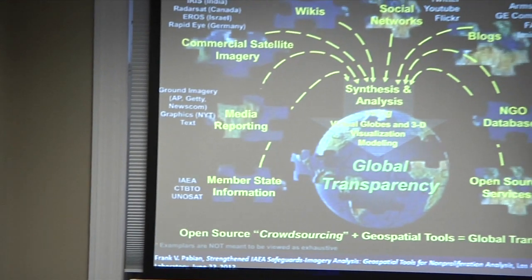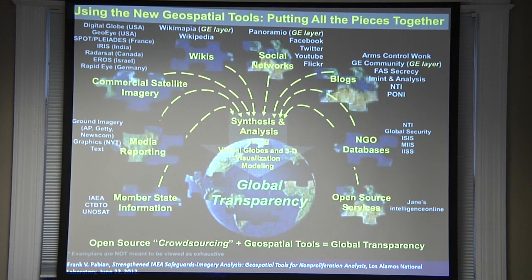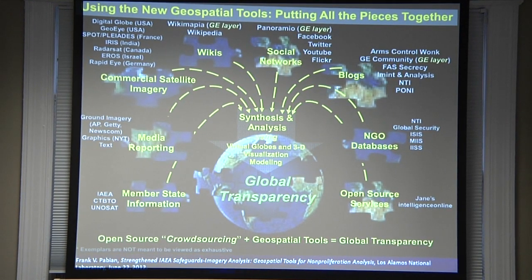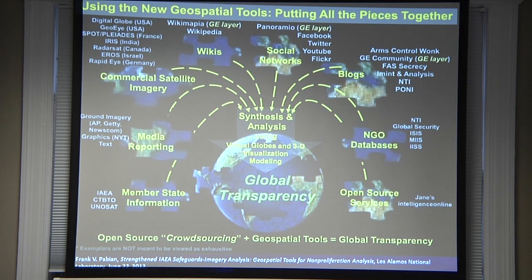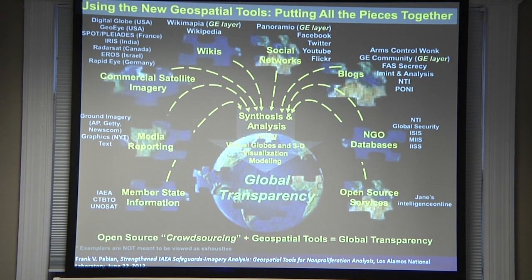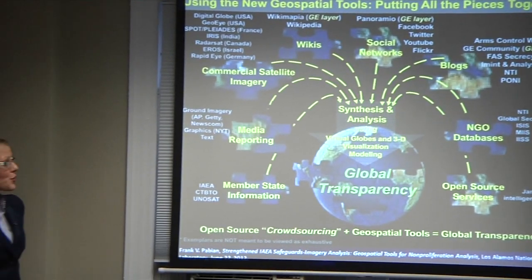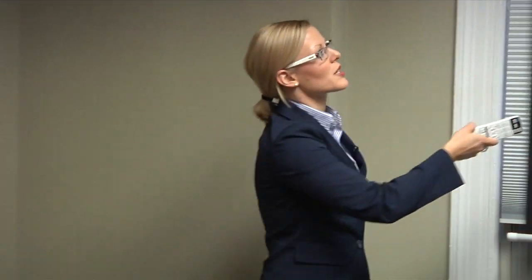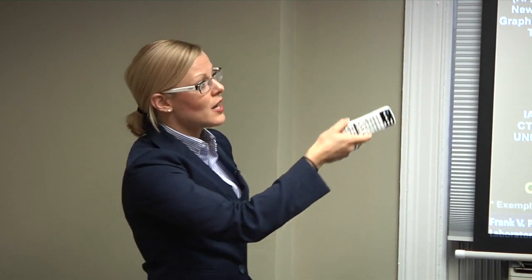Commercial satellite imagery is a great and useful tool, but rarely is it useful by itself. If I just need to know whether a building exists at a location, an image might answer that. But for more integrated analysis of complicated questions, you need to combine satellite imagery with a lot of other information: safeguards reports from the IAEA, what states voluntarily declare, media reports, social networks, NGO databases, and open-source information — all integrated together.